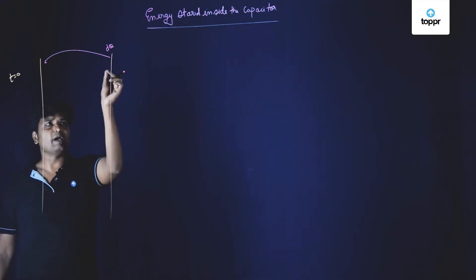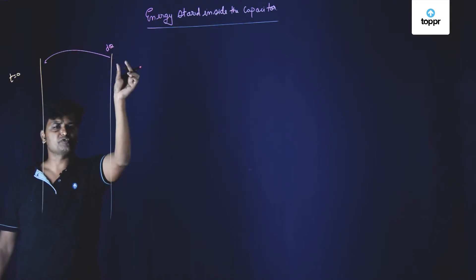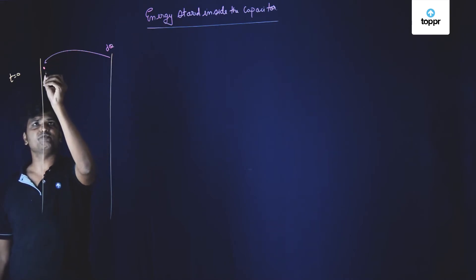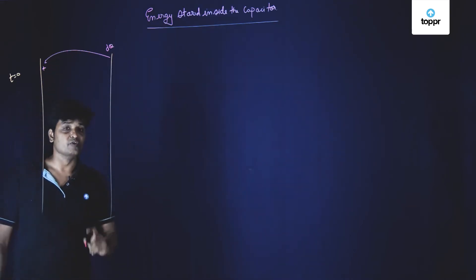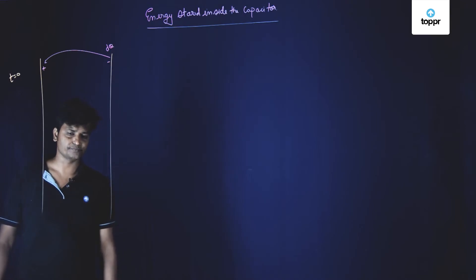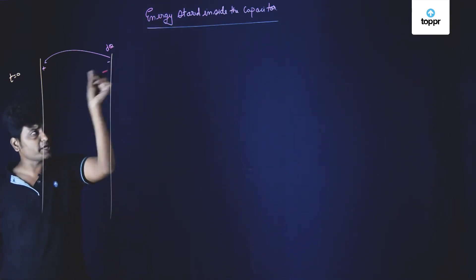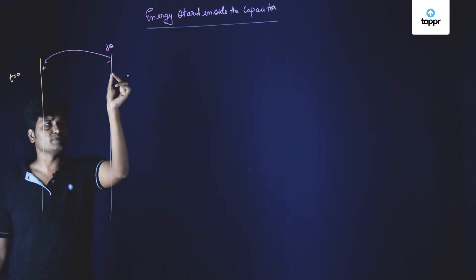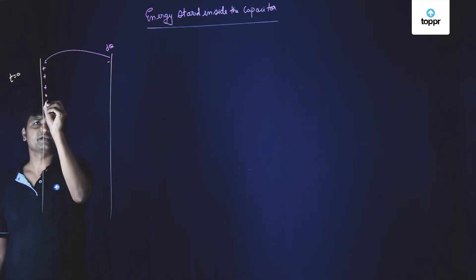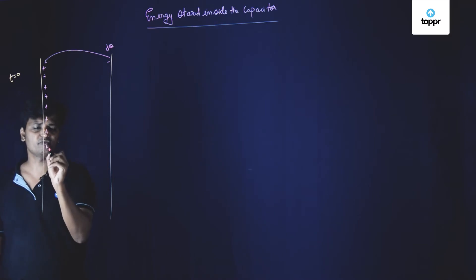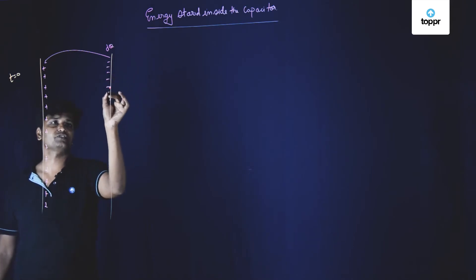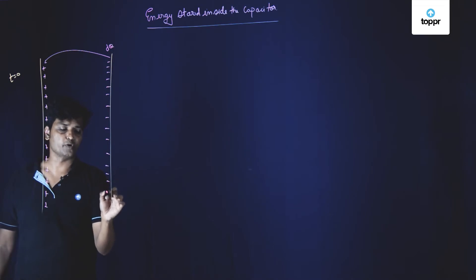When I pluck a small amount of charge dq and transfer it from this plate to the other plate, this plate will have positive charge, whereas the other plate will have a deficiency of positive charge — meaning there will be negative charge. I am continuously plucking dq charge from this plate and depositing the same dq charge on the other plate, so positive charges accumulate on one plate and negative charges accumulate on the other.